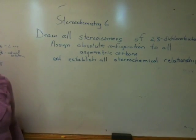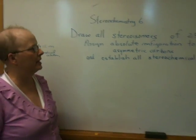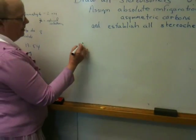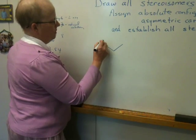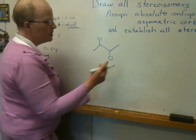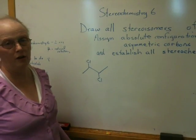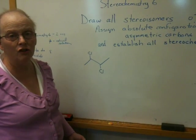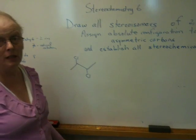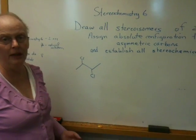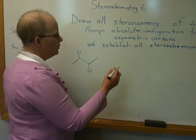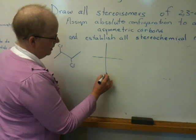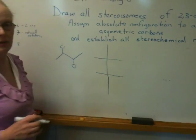This is a very typical problem that you will be faced with. Now, 2,3-dichlorobutane — what does that look like? If I were going to write that on the board, this would be 2,3-dichlorobutane. It's a very simple molecule. Now, instead of using a wedge and hash approach, which is perfectly legitimate, I'm going to use a Fischer projection. As you will recall, a Fischer projection looks like this if you have one asymmetric carbon, or like this if you have two asymmetric carbons.